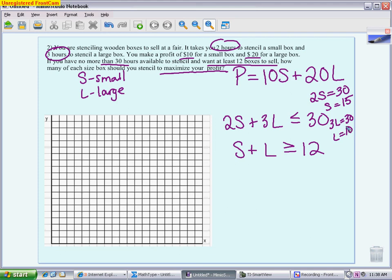I'm going to do the exact same thing with the bottom constraint. If I cover up the L, I get S equals 12. If I cover up the S, I get L equals 12. So my intercepts are actually the exact same number for this one. Doing this first helps you set up your scale.